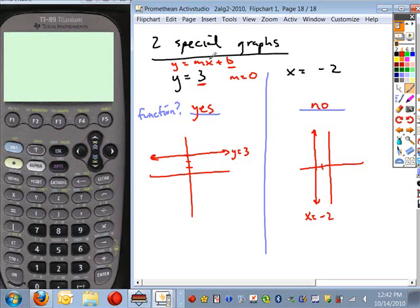It doesn't fit this special form. If you have an equation where x doesn't change, you're just going to have a vertical line. It's not a function. If you have an equation where y doesn't change, you do have a function. It's a horizontal line.